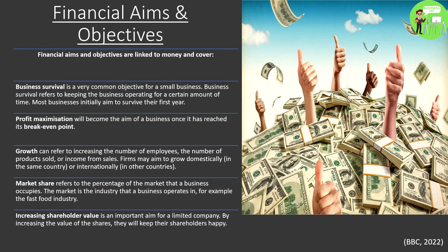Finally, for financial aims and objectives, we have increasing shareholder value. This is an important aim for a limited company. By increasing the value of shares, they will keep their shareholders happy. Shareholders are people that have invested into the business who get paid in dividends when the business profits. By increasing shareholder value, they get more money and are therefore likely to stay invested and invest further into the business.